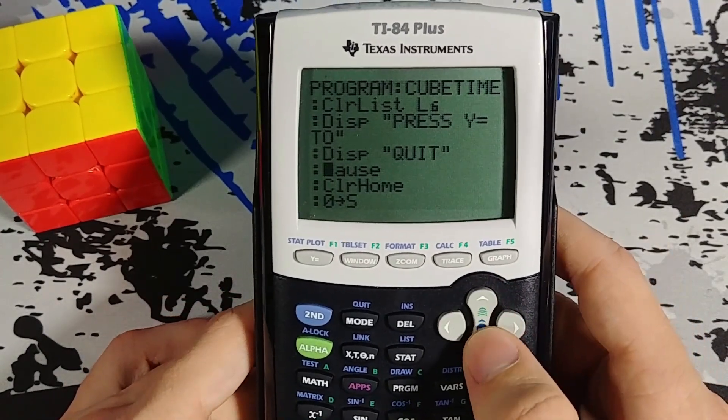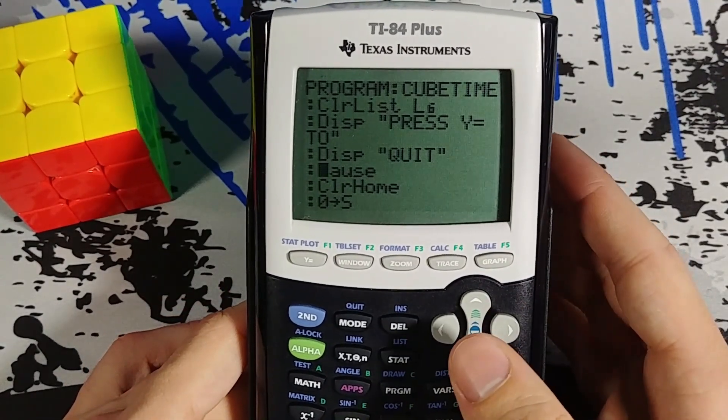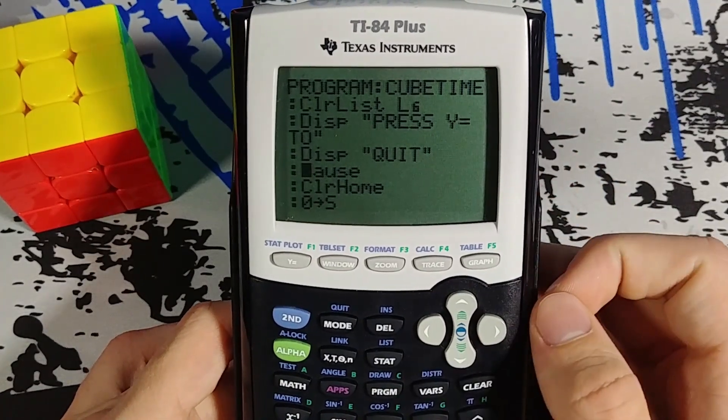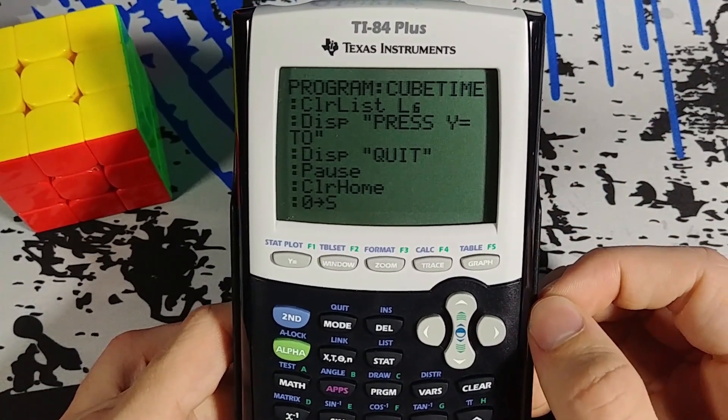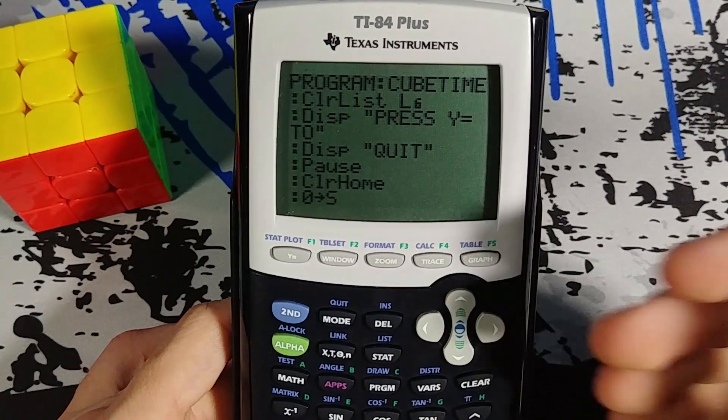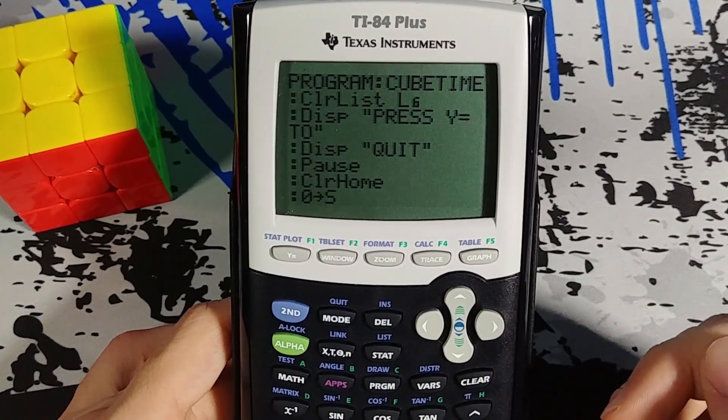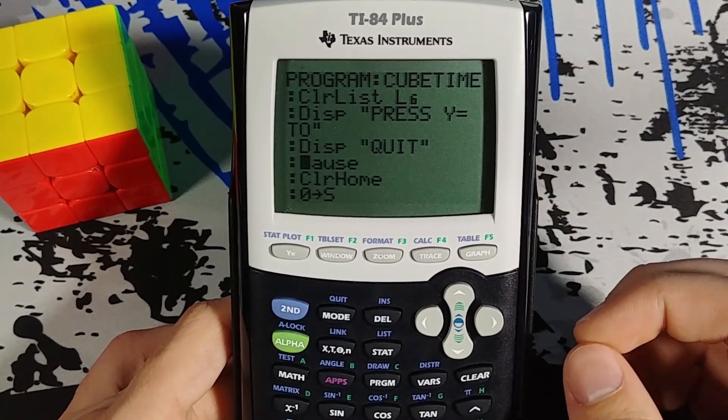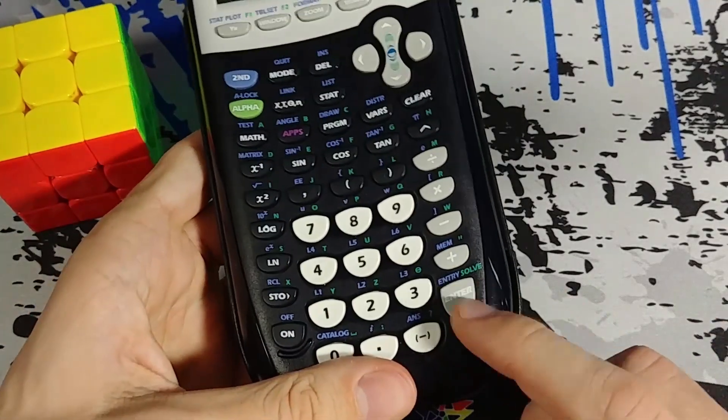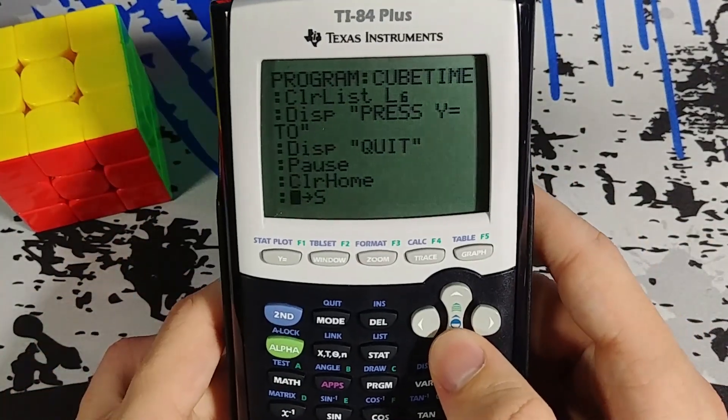The pause button, what that does is it stops the program and waits for the user to click enter. So if you just want a way to scroll through different things of text or something without assigning key values, you can just use the pause button and you press enter to continue. Clear the home again.